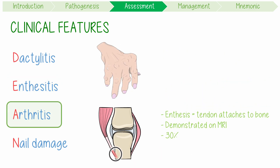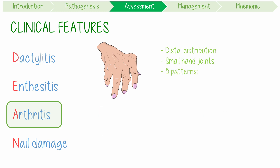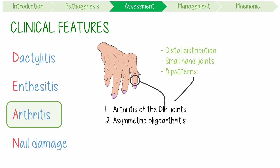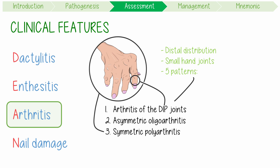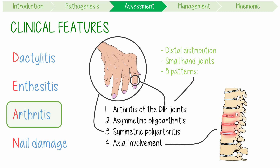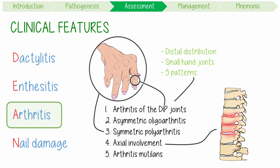A stands for arthritis. In general, this usually has a distal distribution affecting the small hand joints. However, it can occur in up to five different patterns: 1. Arthritis of the distal interphalangeal joints. 2. Asymmetric oligoarthritis. 3. Symmetric polyarthritis, which is similar to rheumatoid arthritis. 4. Axial involvement with the spine and sacroiliac joints. 5. Arthritis mutilans, which is a highly destructive end-stage form of the disease.